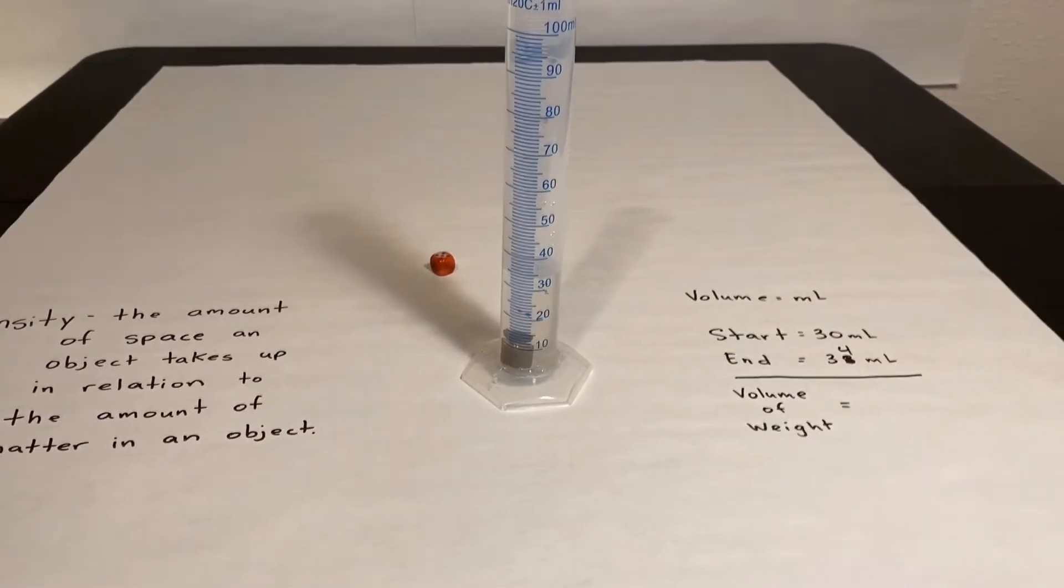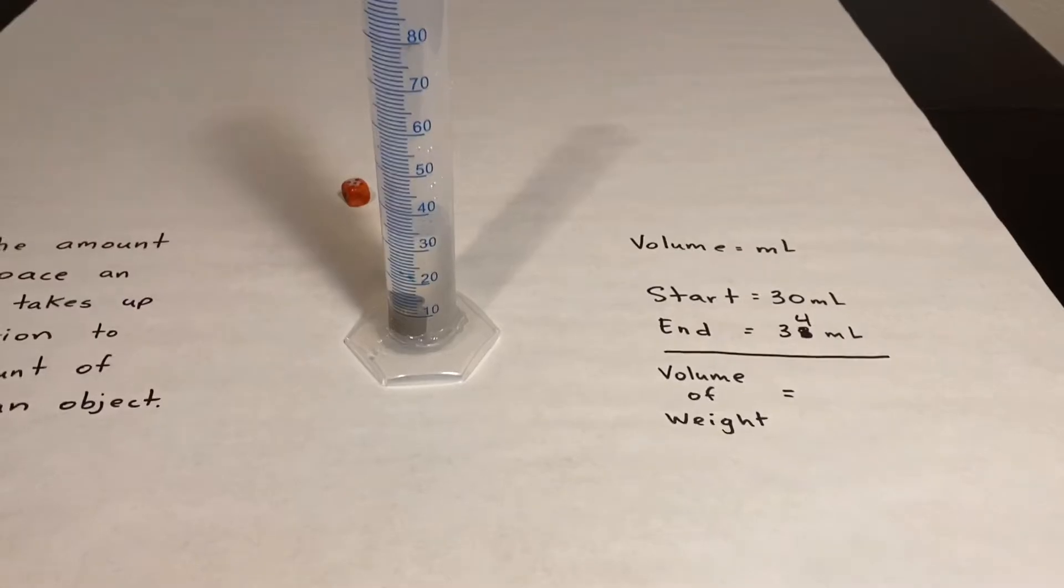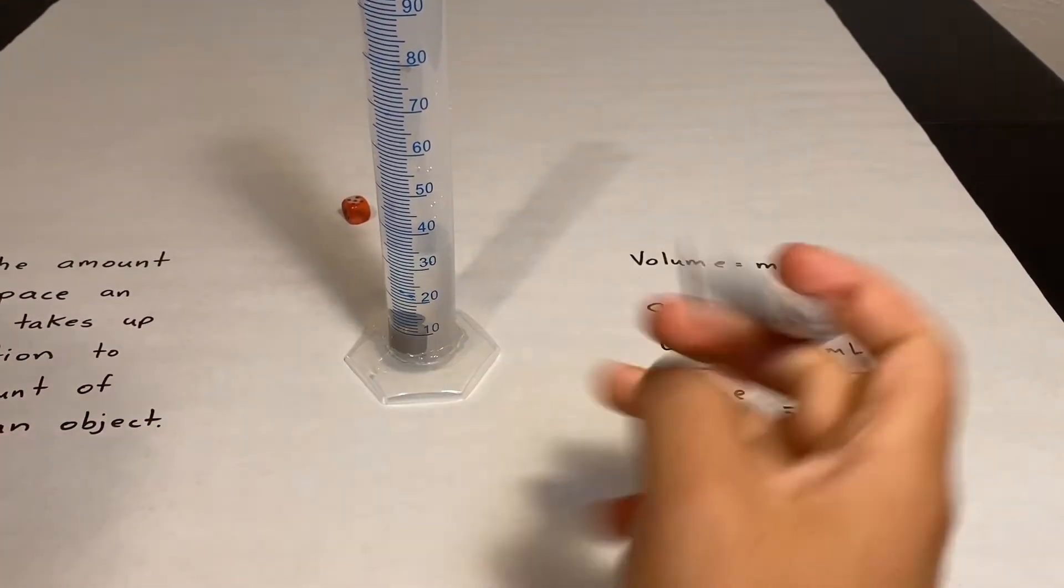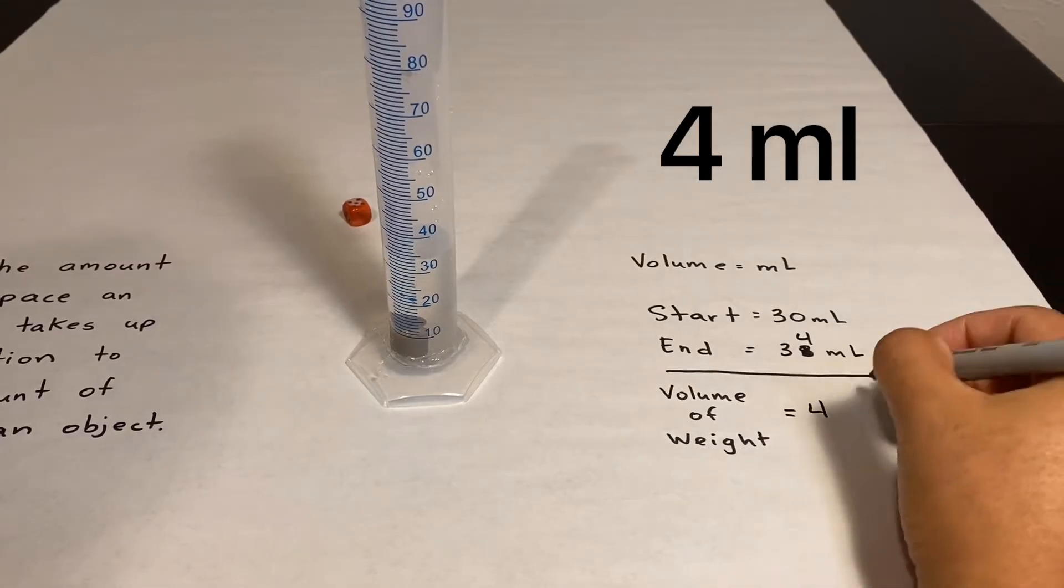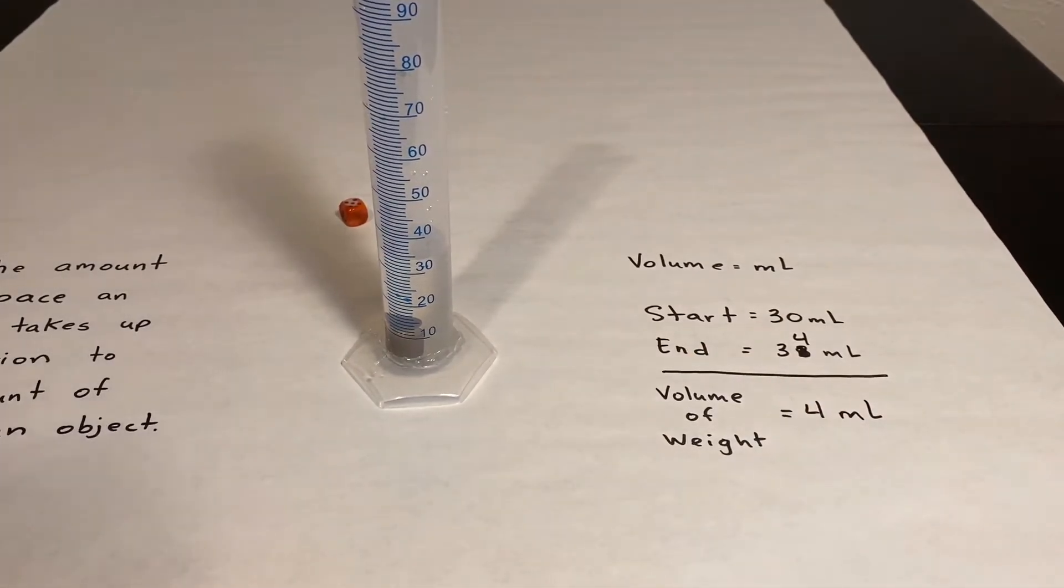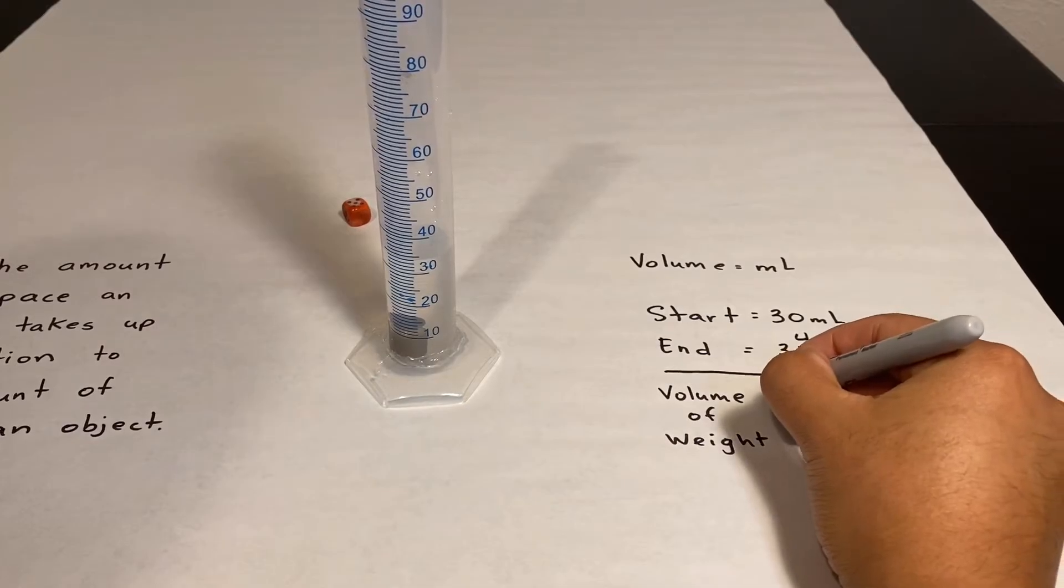So let's figure that out, what's 34 minus 30? It's going to be four, and then the units are going to be milliliters. I'm going to go ahead and put a box around it.